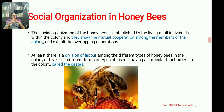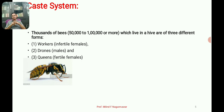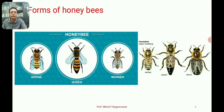In a hive, thousands of bees are present — ranging from 50,000 to one lakh or more. There are different forms of honeybees: workers are infertile females, not capable of reproducing; drones are the males; and the queen is a fertile female. These three forms make honeybees polymorphic organisms.